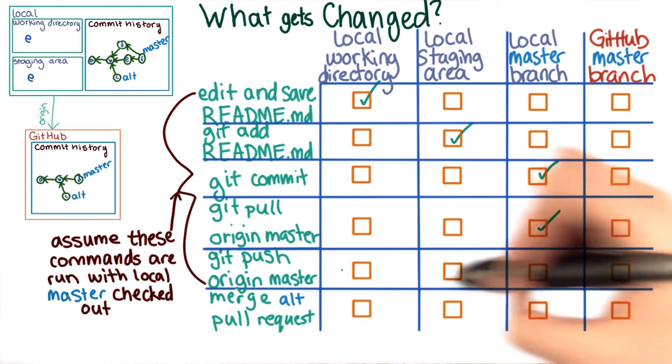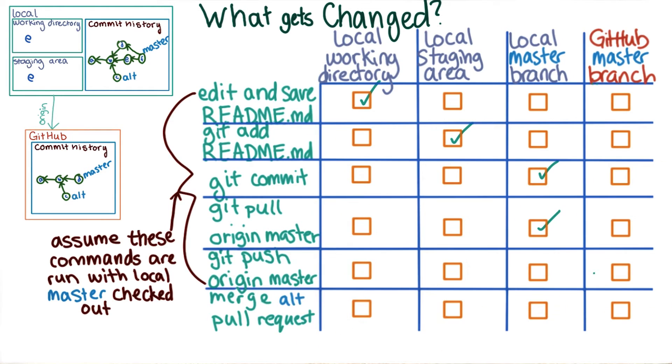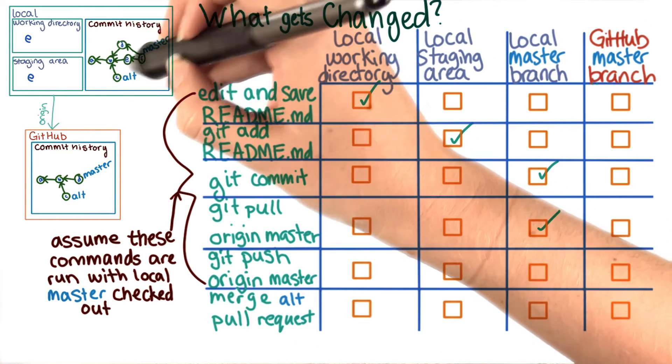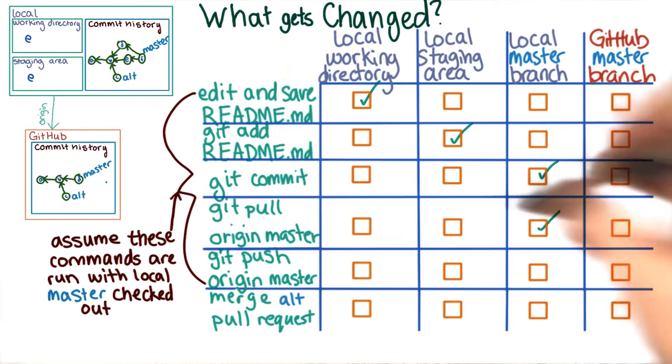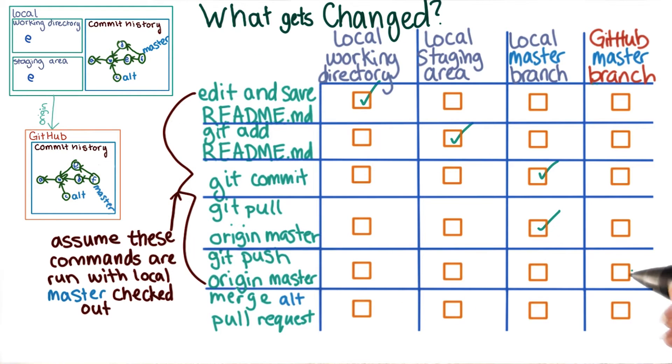Now we have git push origin master. This will take what's in the local version and push it to the remote. So this operation just changes the remote.